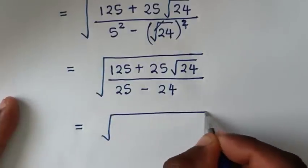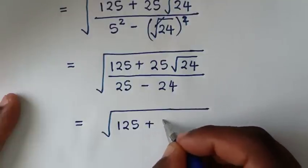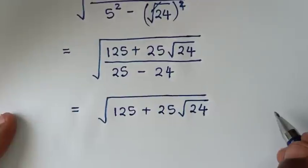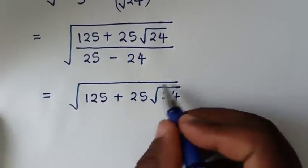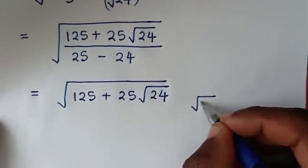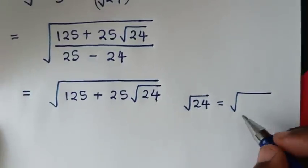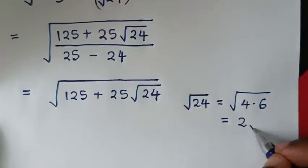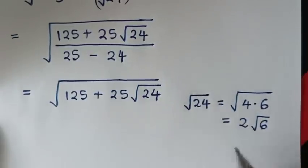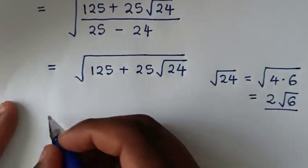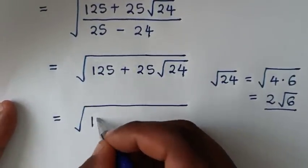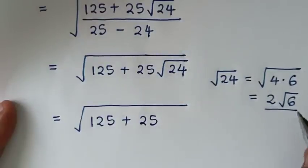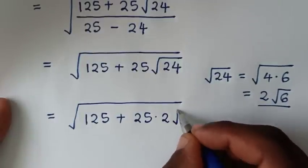Then, in the next step, we'll simplify this square root of 24. Now, square root of 24 is equal to square root of 4 times 6, which is equal to square root of 4 — it is 2 — times square root of 6. So, in here we'll substitute this, and it will be equal to square root of 125 plus 25 times 2 square root of 6.